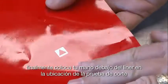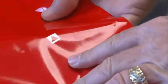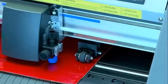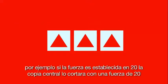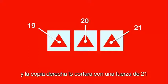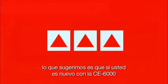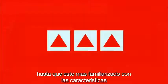Finally, take your hand and place it underneath the liner to the location of the test cut. Apply a little pressure, and if it pops through easily, then the force is too high. The right arrow key will cut three patterns. The middle pattern is cut at the current force, the pattern to the left is cut with the current force minus one, and the pattern to the right is cut at the current force plus one. For example, if the force is set to 20, the middle pattern will be cut at force level 20, the left at 19, and the right at 21. We suggest that if you're new to the CE-6000, use the second test with the three patterns until you become more familiar with the cutting characteristics of the CE-6000.